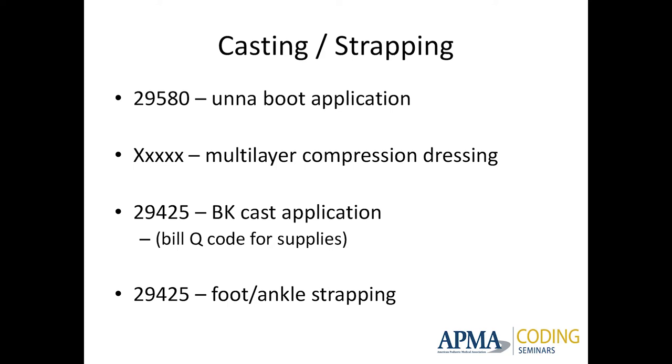29425 is BK cast application. When putting a cast on, there are Q codes (HCPCS codes) to describe the materials: plaster or fiberglass for a below-knee walking cast. Bill those codes too, because you get paid for the materials as well as the cast application. There's only one unit of those materials even if you used four rolls of fiberglass — still one unit of the Q code. 29425 covers foot-ankle strapping — your typical plantar fascial low-dye strap, J-strap for peroneal tendonitis, high-dye strap for Achilles tendonitis. Any of those fall under this code.